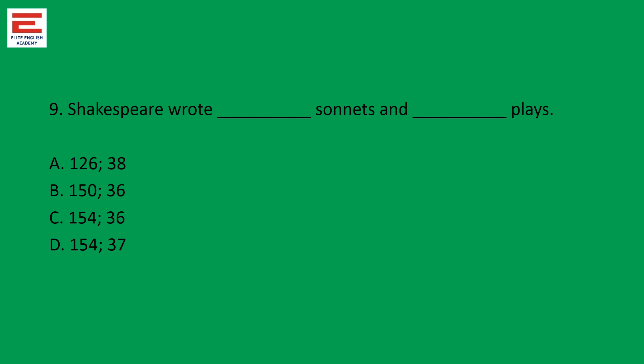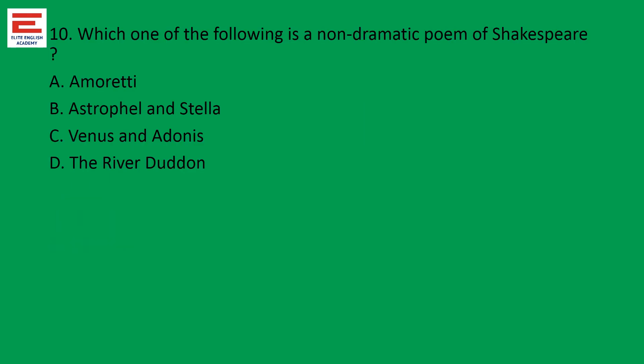Next — a very common question: Shakespeare wrote 154 sonnets and 37 plays. One play is unfinished and a few plays have disputed authorship, but the confirmed plays are 37 only. Next question: which one of the following is a non-dramatic poem of Shakespeare? The answer is Venus and Adonis, which has been repeatedly quoted by many critics. This is the early poem in which Shakespeare showcased his strength as a dramatist and poet.